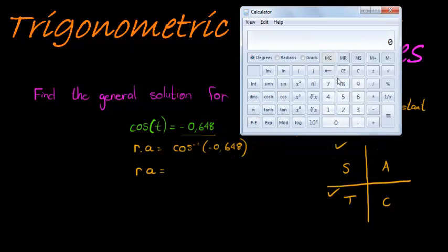So I have 0.648, I include my negative. That negative will indicate to my calculator that we need a reference angle that considers the negative.